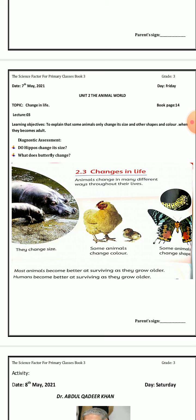Today my lecture number is 3. The learning objective is: students should be able to explain that some animals change only their size, and others change their shape and color when they become adult. Today we will discuss how animals change in color, shape, and size.